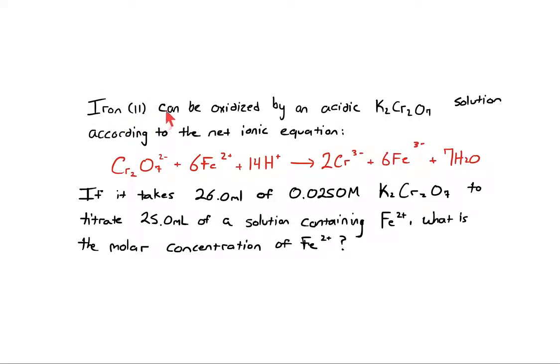Iron(II), the ion, can be oxidized by an acidic potassium dichromate solution, according to the net ionic equation shown here in red.